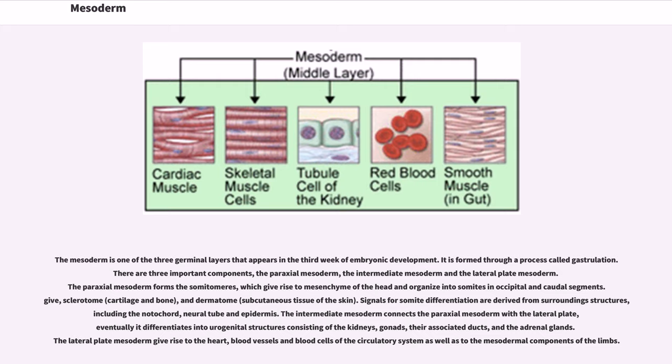The intermediate mesoderm connects the paraxial mesoderm with the lateral plate. Eventually it differentiates into urogenital structures consisting of the kidneys, gonads, their associated ducts, and the adrenal glands. The lateral plate mesoderm gives rise to the heart, blood vessels and blood cells of the circulatory system as well as to the mesodermal components of the limbs.